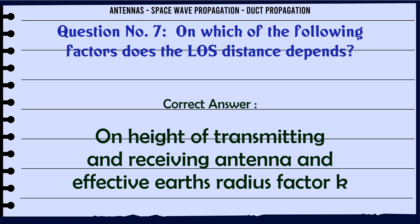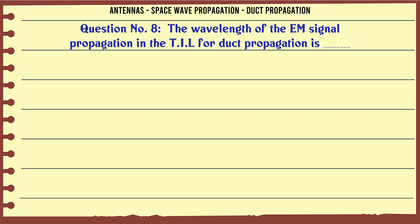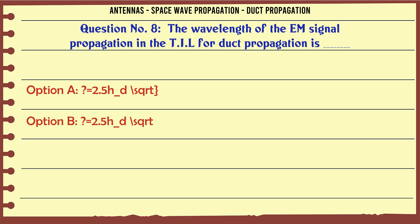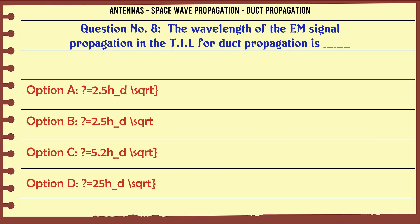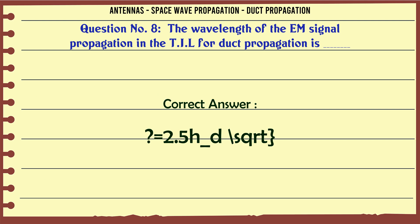The wavelength of the beam signal propagation in the TIL for duct propagation is: A) 2.5 h_d √(10^6), B) 2.5 h_d √(10^6), C) 5.2 h_d √(10^6), D) 2.5 h_d √(10^6). The correct answer is 2.5 h_d √(10^6).